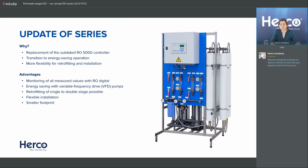The advantages of the new series: we can monitor all values with the RO Digital controller; we have an energy-saving version from size 750 on with variable frequency drive pumps; we can now retrofit old UOD units to a double stage, which was not possible before. If you install the permeate staged series directly, you have more flexible installation because you have two separate stages — you can position them apart from each other — and for the smaller units you have a smaller footprint.